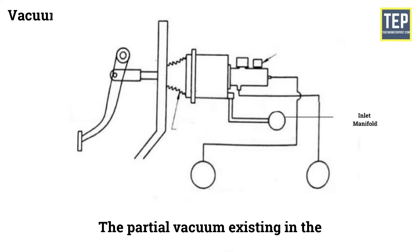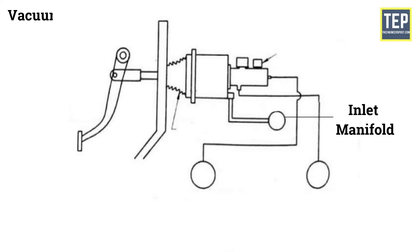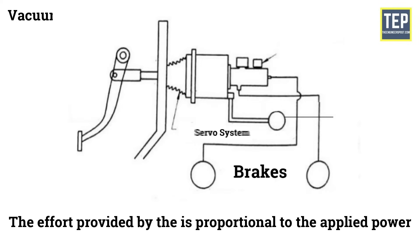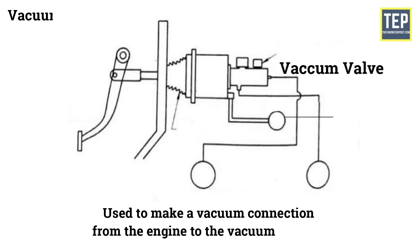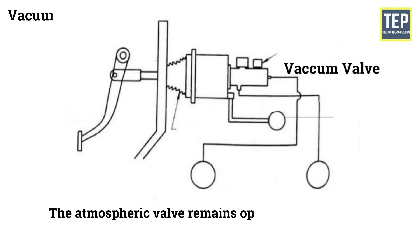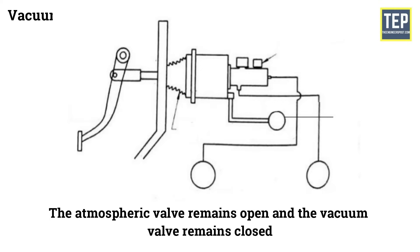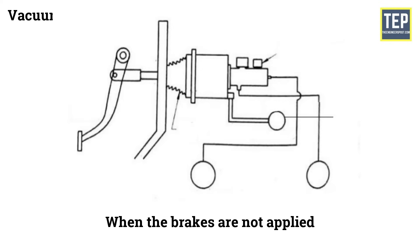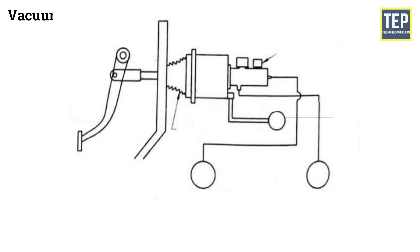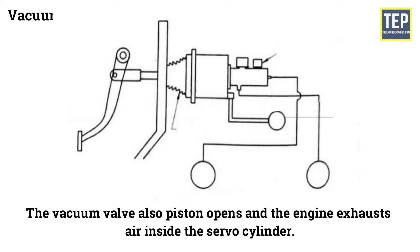Vacuum brake. In this system, the partial vacuum existing in the inlet manifold when the engine is running provides the power to operate the brakes. The effort provided by the servo system is proportional to the applied power. A vacuum valve is used to make a vacuum connection from the engine to the vacuum cylinder. The atmospheric valve remains open and the vacuum valve remains closed when the brakes are not applied. When the brake pedal is depressed, the atmospheric valve opens, the vacuum valve and piston open, and the engine exhausts air inside the servo cylinder.